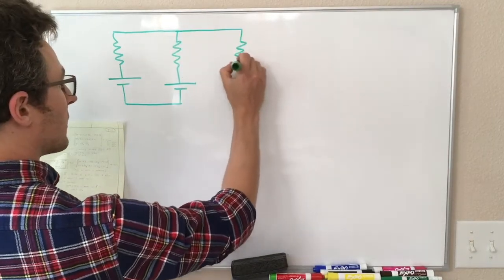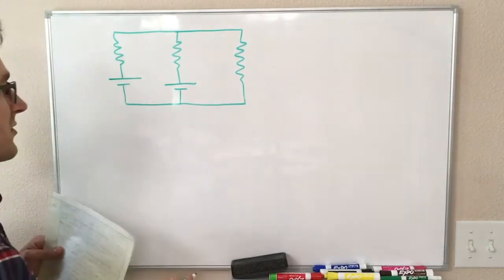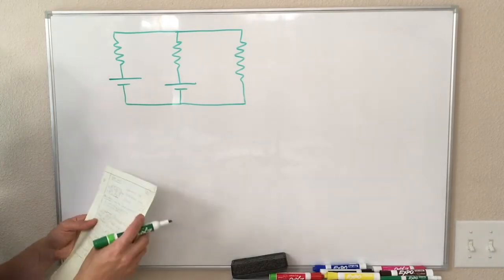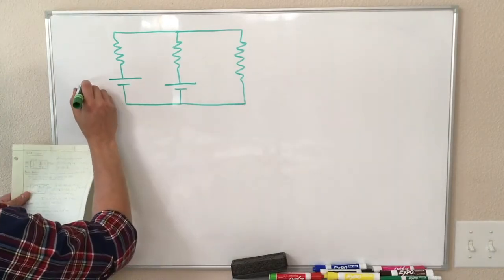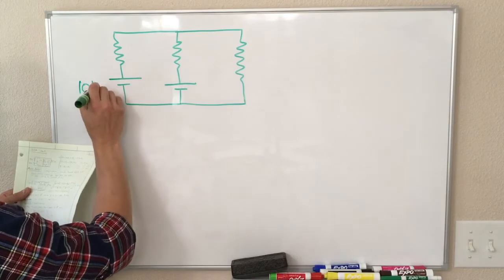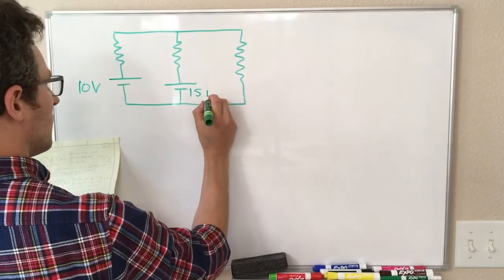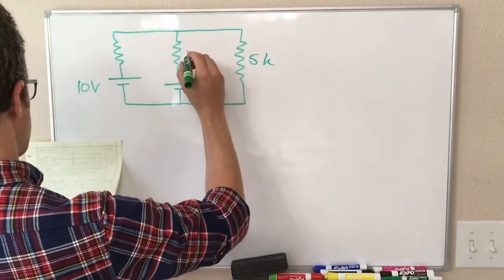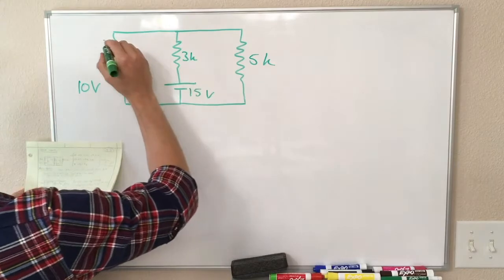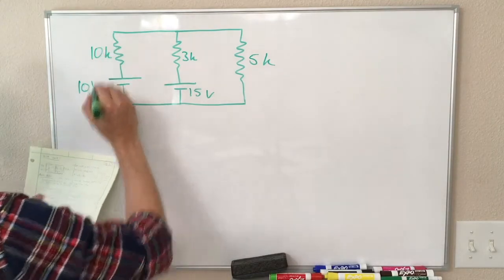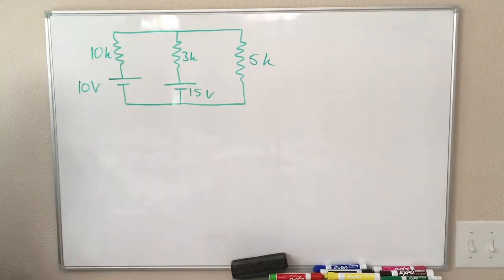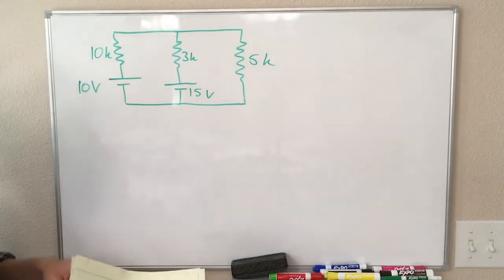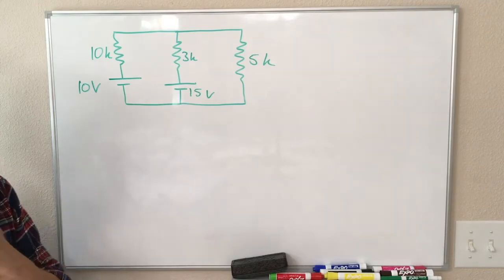The branch current analysis and other techniques, they work just fine if you have something with only one source. They will work for basically any circuit we're going to run into. So let's say this is 10 volts, and this is 15 volts, and this is 5 kilohms, 3 kilohms, and 10 kilohms. So we would like to know everything about this circuit, but it will be enough to find the current through every part of the circuit.